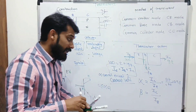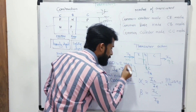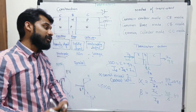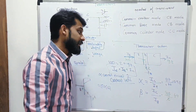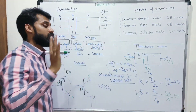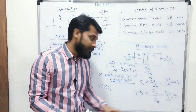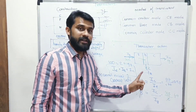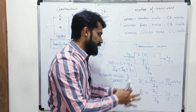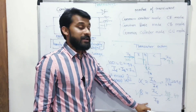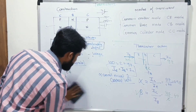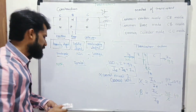Beta = IC/IB = 98/2 = 49. Beta can be very large — it can go up to 500. So beta is very very large compared to alpha. Alpha is IC/IE; beta is IC/IB. These are the two important current ratios. To establish the relation between alpha and beta, we start from IE = IB + IC and divide throughout by IC.